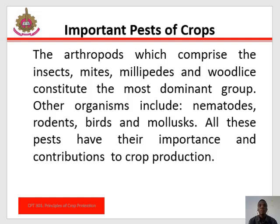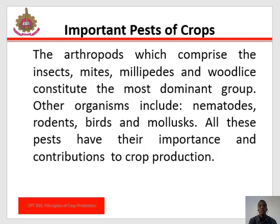Important pests of crops: The arthropods, which comprise insects, mites, millipedes, and woodlice, constitute the most dominant group. Other organisms include nematodes, rodents, birds, and mollusks. Insects belong to the group of organisms known as the arthropods. Their small size, remarkable range of adaptation, rapid rate of reproduction, great mobility, and efficient water conservation enable them to colonize nearly every habitat, including all types in which crop production takes place.